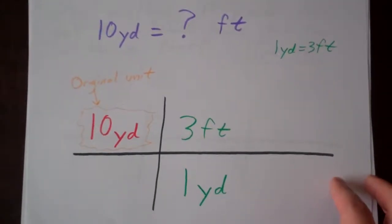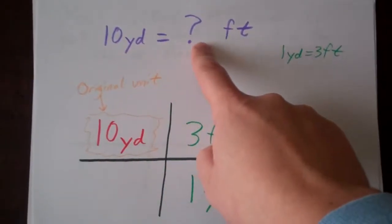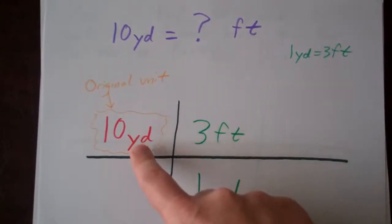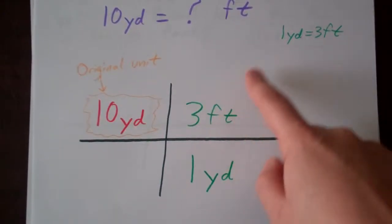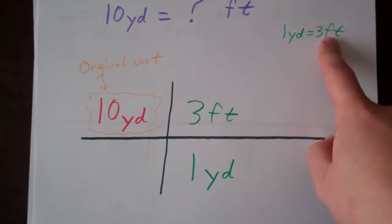What are we trying to find? 10 yards equals how many feet? We're going to start with our original unit, 10 yards, and use our conversion rate here. Our conversion rate, remember, was 1 yard equals 3 feet.